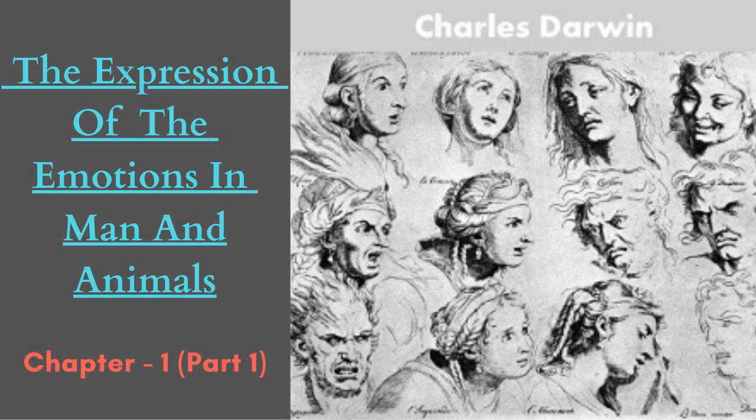With respect to our first principle, it is notorious how powerful is the force of habit. The most complex and difficult movements can in time be performed without the least effort or consciousness. It is not positively known how it comes that habit is so efficient in facilitating complex movements, but physiologists admit that the conducting power of the nervous fibers increases with the frequency of their excitement. This applies to the nerves of motion and sensation as well as to those connected with the act of thinking. That some physical change is produced in the nerve cells or nerves which are habitually used can hardly be doubted, for otherwise it is impossible to understand how the tendency to certain acquired movements is inherited.